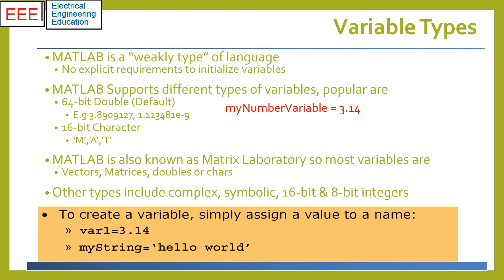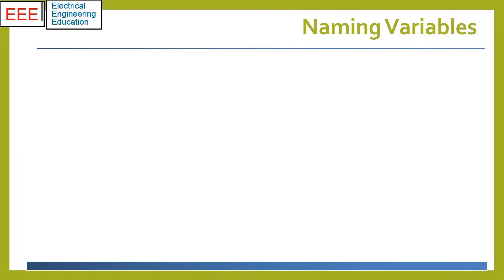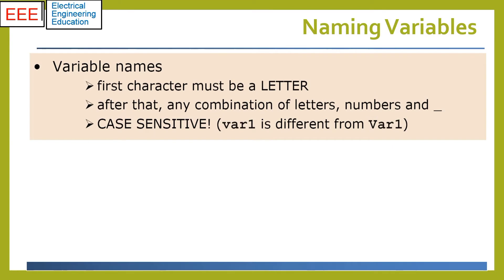A variable is created by assigning a value to a name such as var1 = 3.14 and mystring = 'hello world'. The variable name must start from a letter, followed by any combination of letters, numbers, and underscores. Names are case-sensitive.